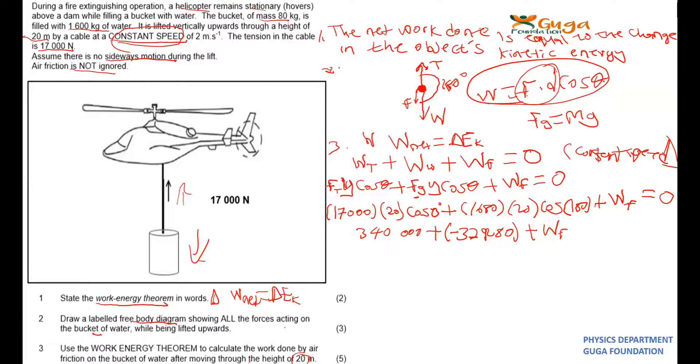Work done by friction is zero. So the sum of these two should give you 10,720.